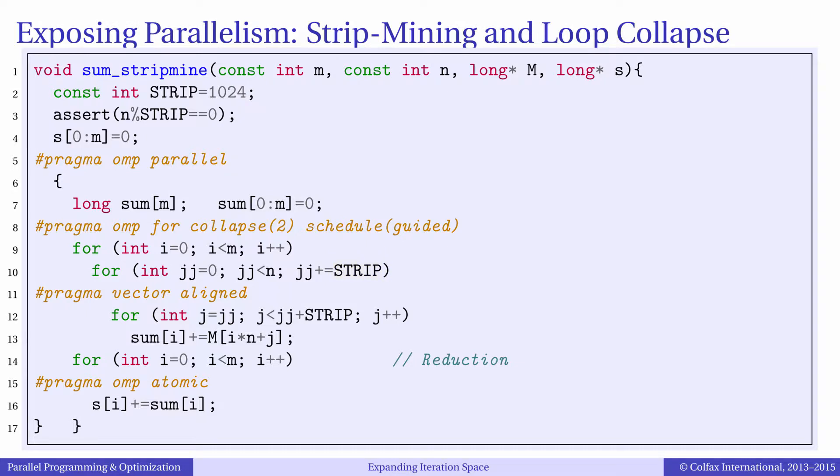As you can see, what we did is we strip mined the loop in j. Finally, the outer loop is in i, as in the original code.